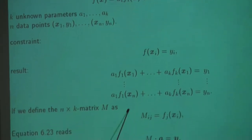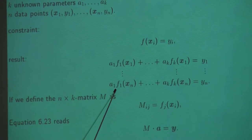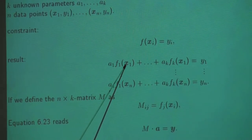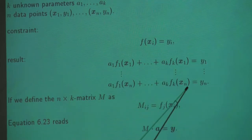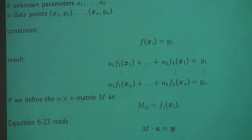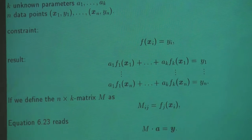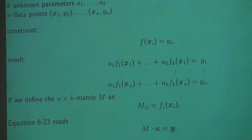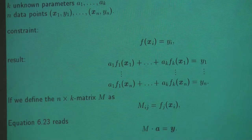We introduce this new notation. At an arbitrary position in this linear system, the coefficient is fj of xi. We define the matrix M where element M_{i,j} equals fj applied to xi. Now we can write this system as M times the vector a equals the right-hand side y. This is our linear system — it's very important because now we are going to talk about exactly this linear system.